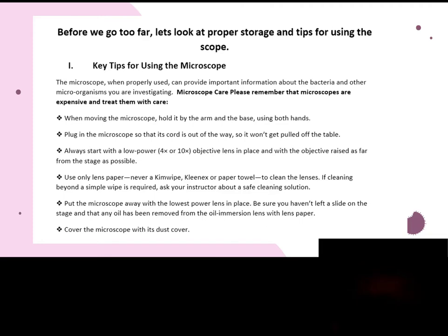We use lens paper to clean the lens — never Kleenex or paper towels, which can scratch lenses. There's specialized lens paper that is a very fine linen and will not scratch. We always put the microscope away in the ready position: stage all the way down, set back to 4x. The person who uses the scope after you should not be able to tell you used it. It should not be left in disarray with oil on it or on some other objective.